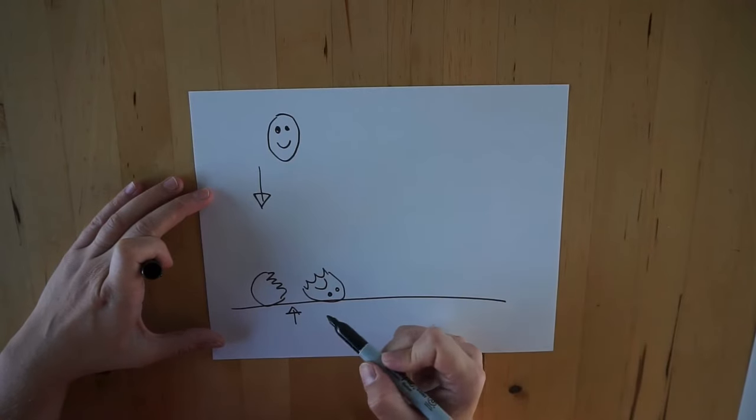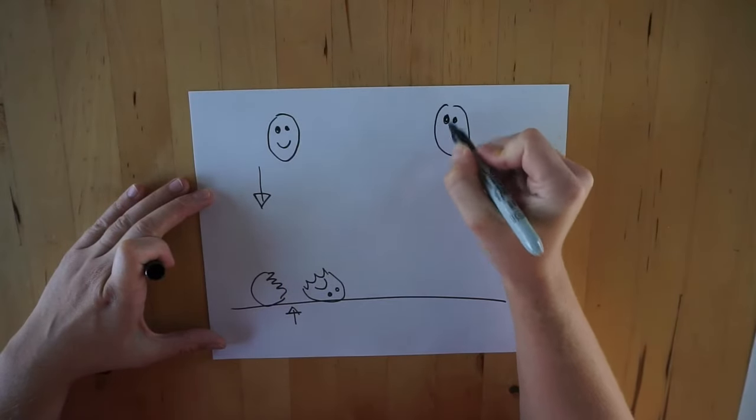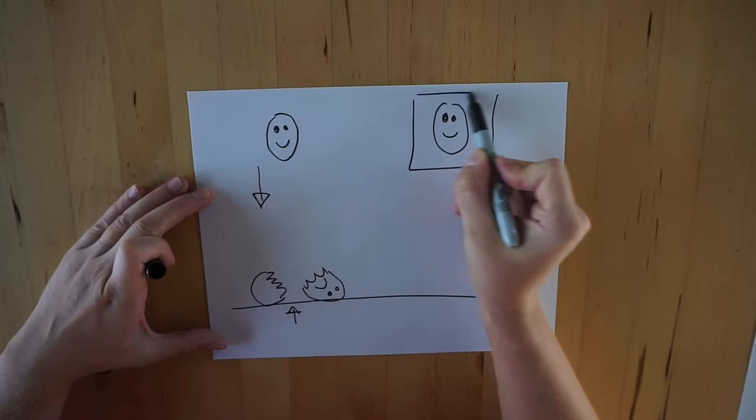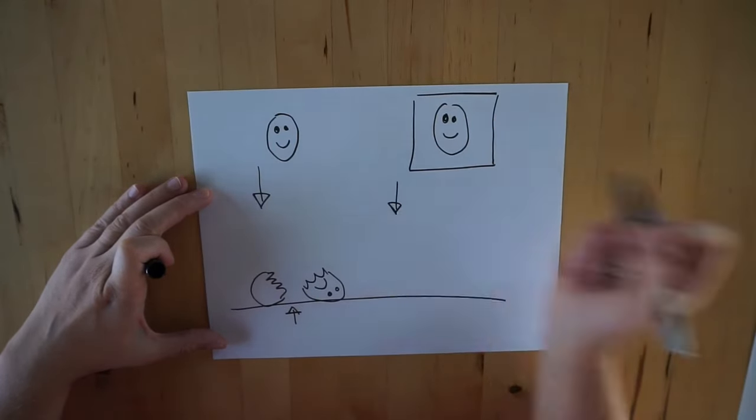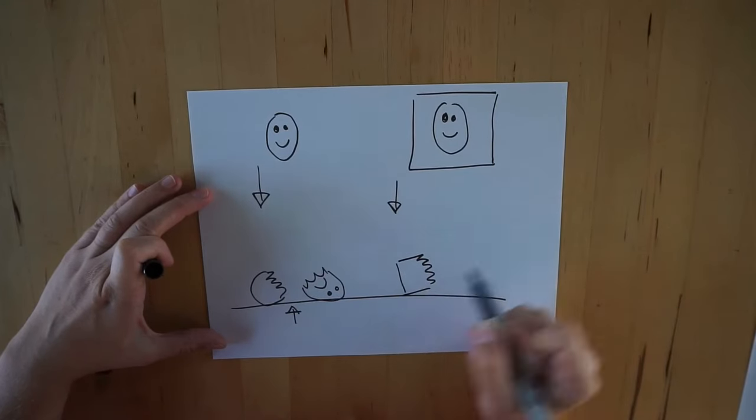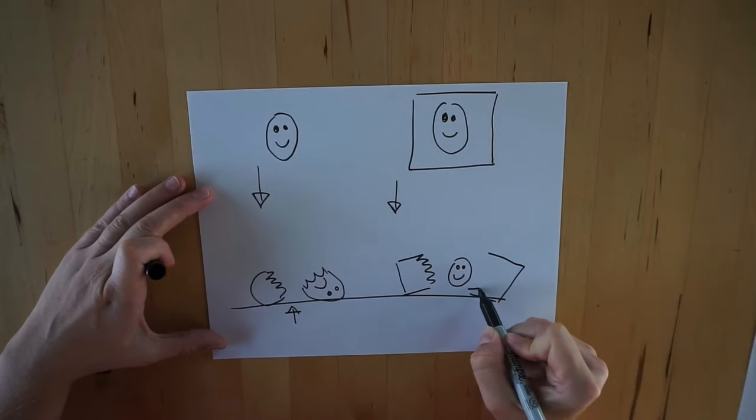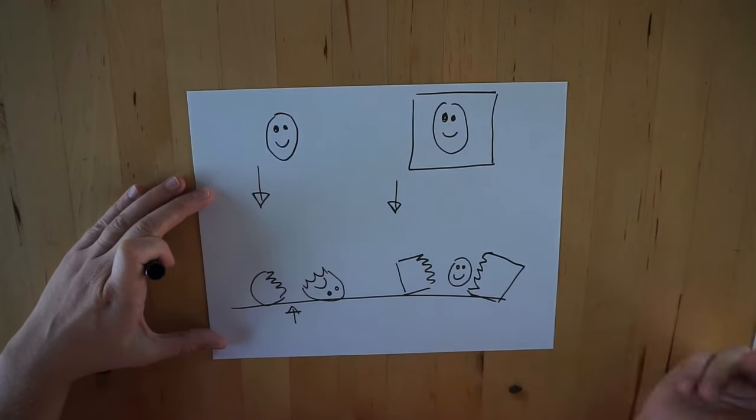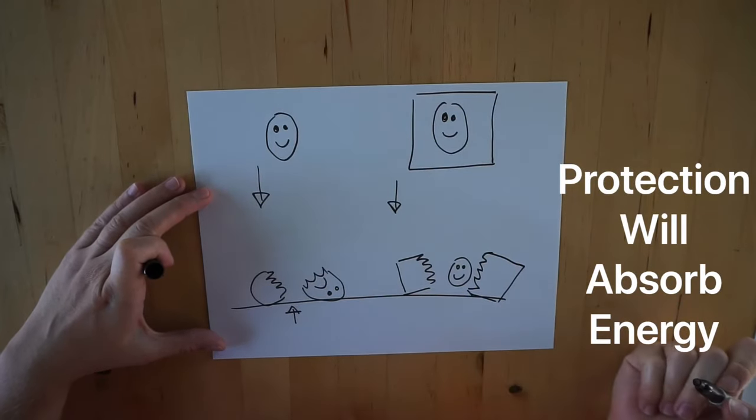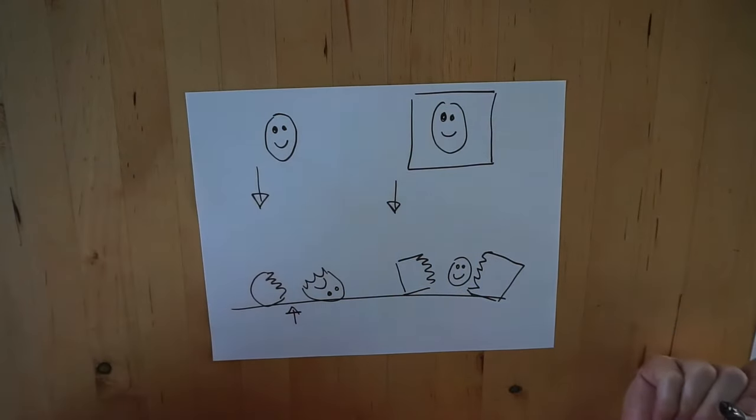What we want to do is build something around our egg that protects it when it crashes on the ground. So that this time not our egg will absorb the energy and break from absorbing it, but our protection gear will absorb the energy. All the energy will be in here and our egg will survive.